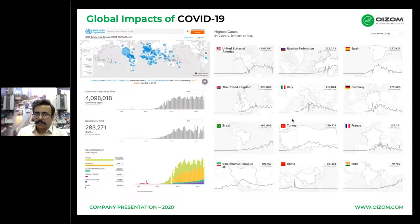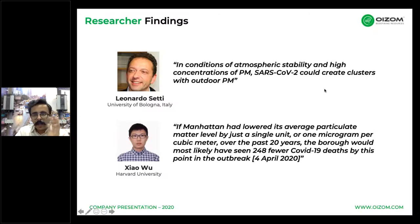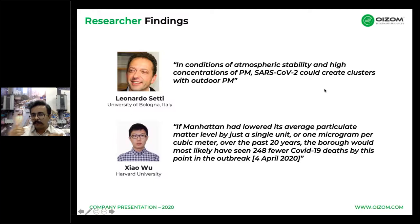The most affected country has been the US, and the world has seen more than 4 million cases with around 300,000 deaths. Professor Leonardo Setti from the University of Bologna has come up with a correlation between PM, SARS, and how clusters found outdoor PM correlation with the virus. A Harvard University study also stated that if Manhattan had lowered its average particulate matter level by just 1 microgram per cubic meter over the past 20 years, there could have been 248 fewer deaths.